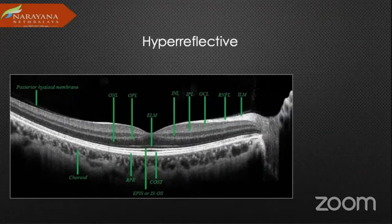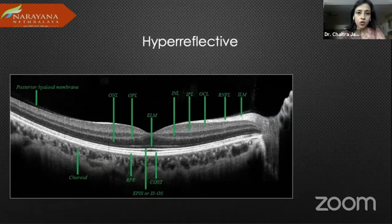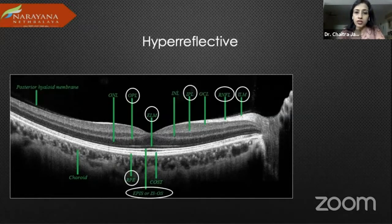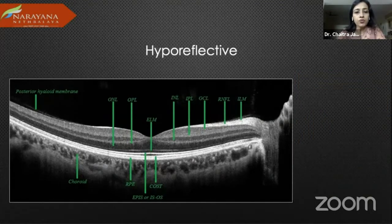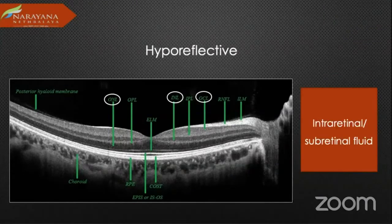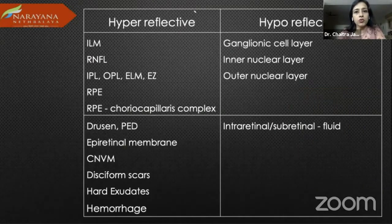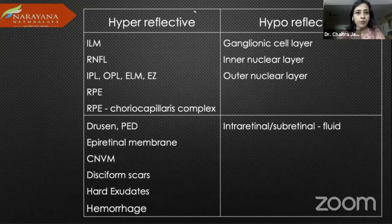Two important things you see on an OCT are whether it is hyper-reflective or hypo-reflective. Hyper-reflective layers are mostly the OPL and IPL, and also some pathology. Hypo-reflective areas are mostly the nuclear layers — the outer nuclear, inner nuclear, and the ganglion cell layer. Hypo-reflective findings also include intra-retinal and subretinal fluid. There is a useful table showing both normal and pathological lesions that are hyper- and hypo-reflective.